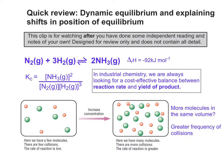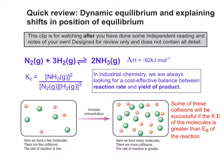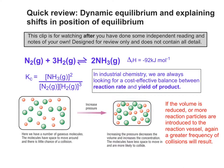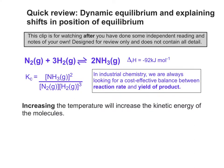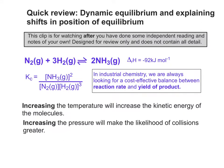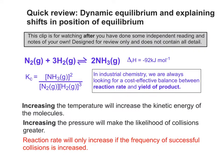Let's take a closer look at reaction rate. If you have more molecules in the same volume, you get a greater frequency of collisions. If the kinetic energy of the molecules in some collisions is greater than the activation energy of the reaction, some of those collisions will also be successful. If you increase the pressure by either reducing the volume of the container or introducing more reaction particles into the vessel, a greater frequency of collisions will result. Increasing the temperature will increase the kinetic energy of the molecules; increasing the pressure will make the likelihood of collisions greater. But reaction rate will only increase if the frequency of successful collisions is increased.